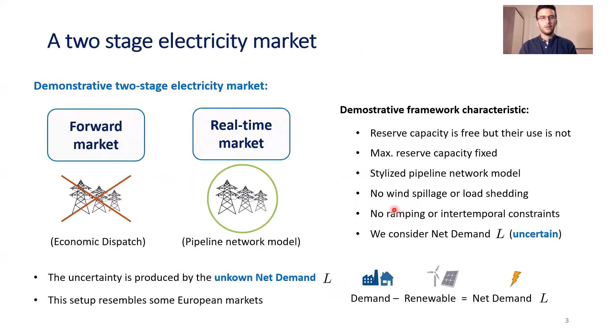We demonstrate this in the context of a two-stage electricity market. We consider a forward market that neglects the power transmission grid and is modeled through economic dispatch, and we also consider a real-time market in which we consider a pipeline network model, a simplified version. This is a demonstrative setup to prove the potential of this methodology. The main source of uncertainty is the unknown net demand L, computed as the difference between demand and renewable production. This setup resembles semi-European markets.